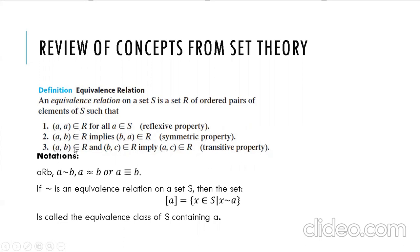The third property it must satisfy is the transitive property: if (a, b) belongs to R and (b, c) belongs to R — that is, the second component of one ordered pair equals the first component of the other — then this implies that the ordered pair (a, c) also belongs to R. If a relation satisfies reflexive, symmetric, and transitive properties, then it is called an equivalence relation.